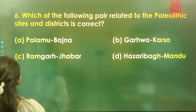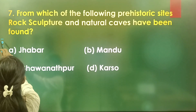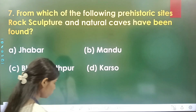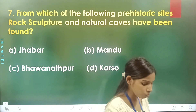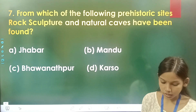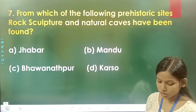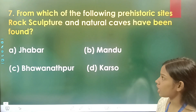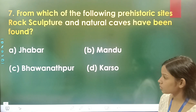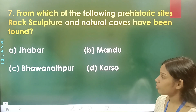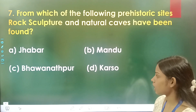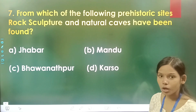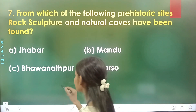Question number 7: From which of the following prehistoric sites have rock sculptures and natural caves been found? Option A is Jhabar, option B is Mandu, option C is Bhavanathpur, and option D is Karsov. The correct answer is option C, Bhavanathpur.